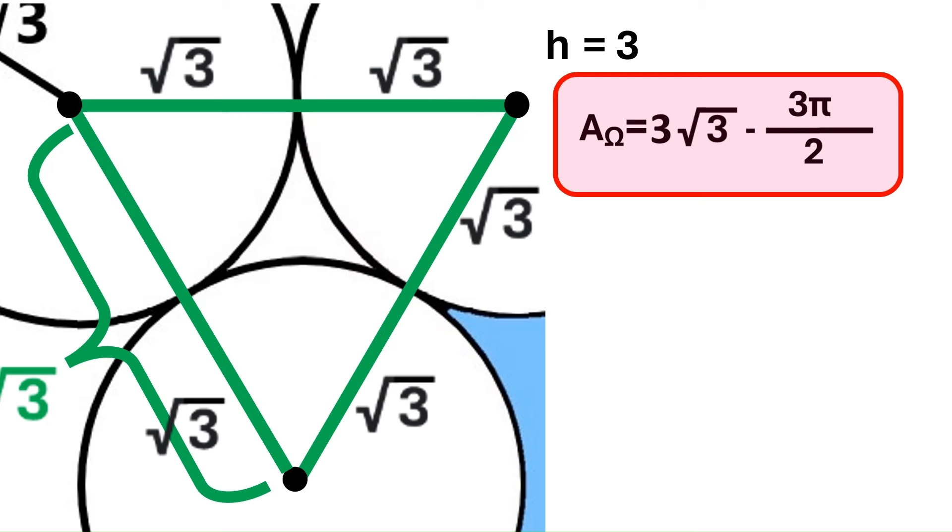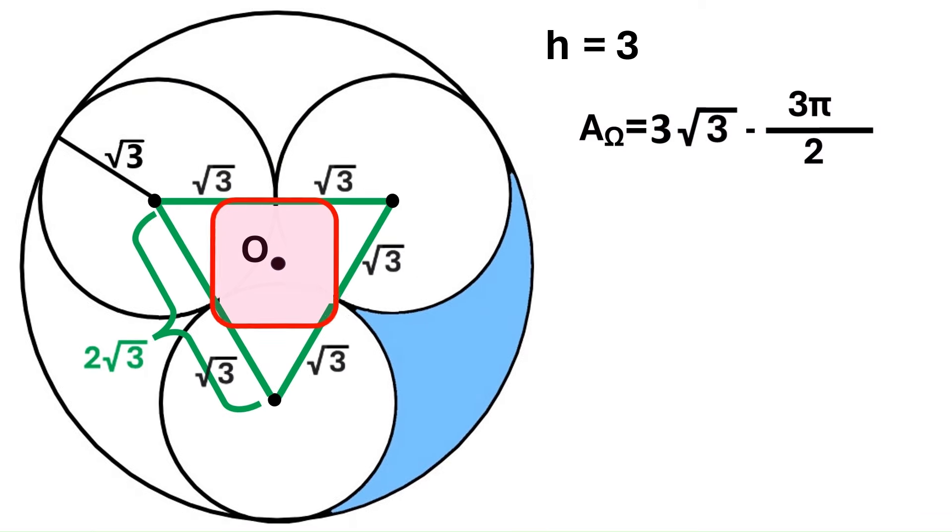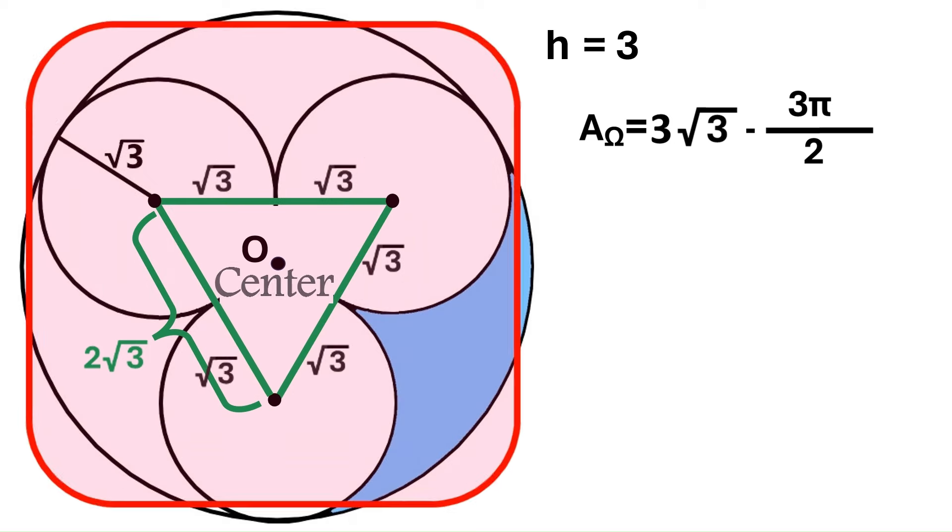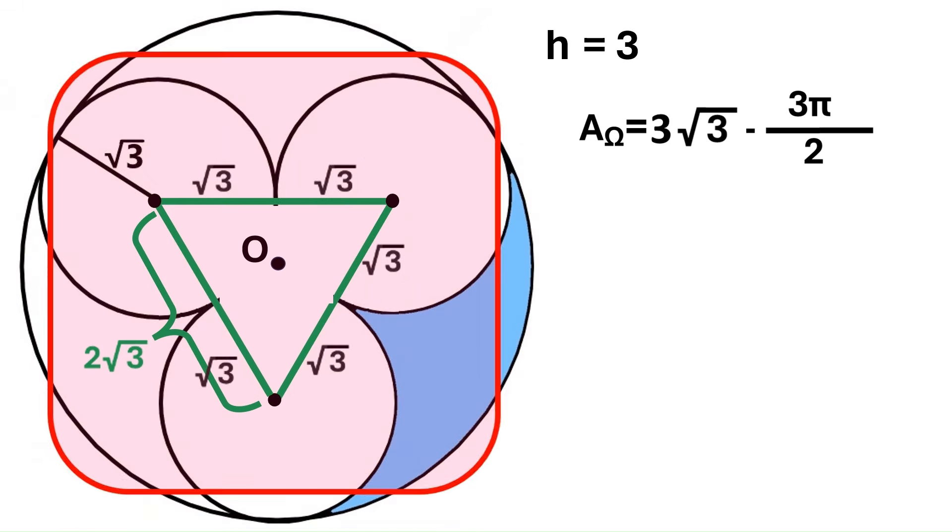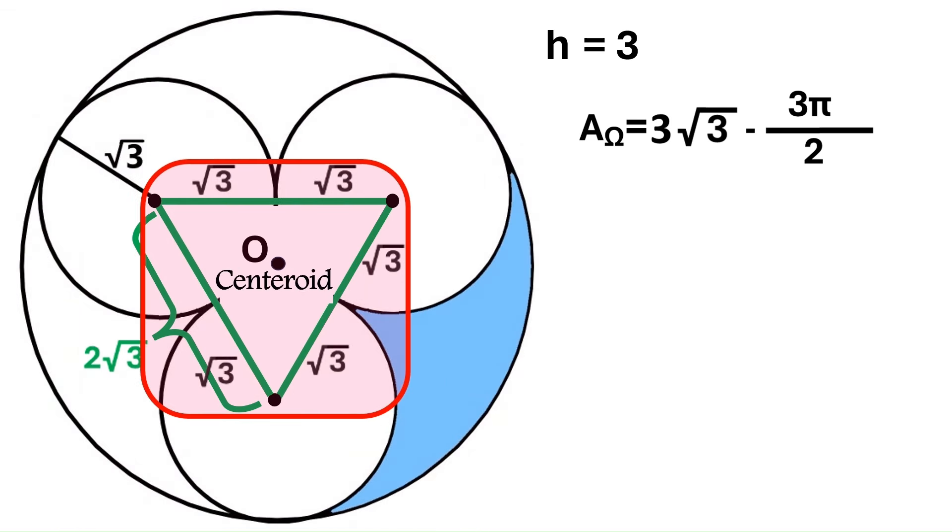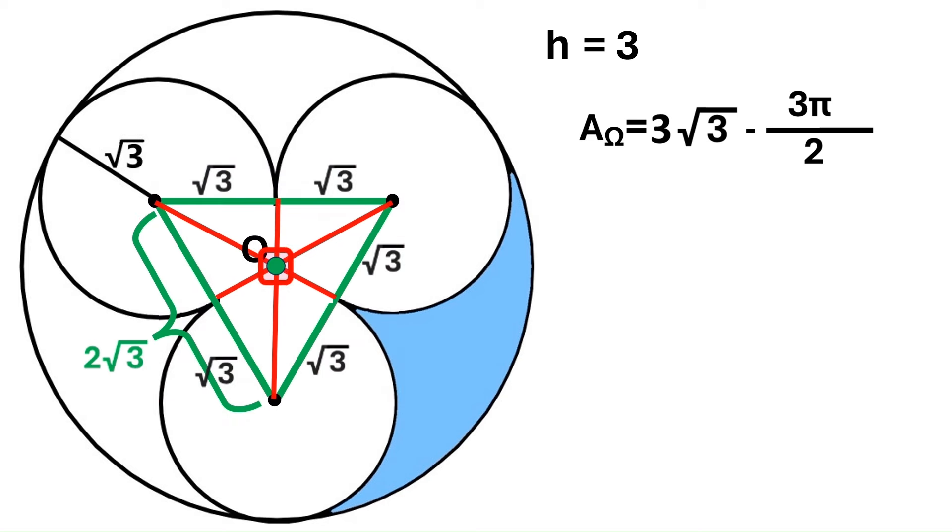Now, it's time to zoom out to see the entire picture. Let's put this point O right in the middle. It's the center of the big circle, and it's also the centroid of this green equilateral triangle. A triangle's centroid is where its medians meet. And in an equilateral triangle, the height is the median. And we know the height of this triangle is 3, so let's put 3 here.